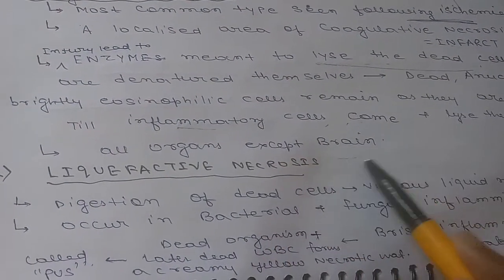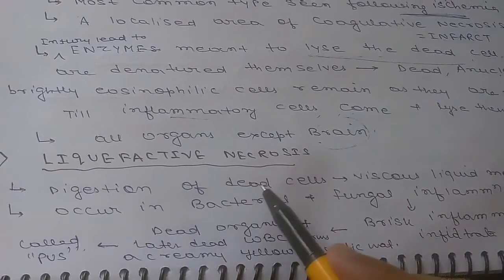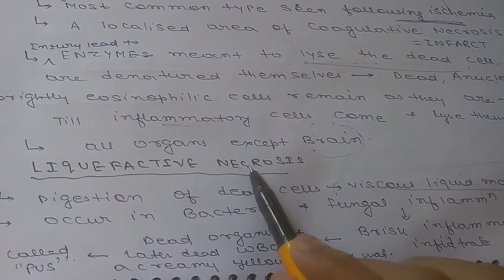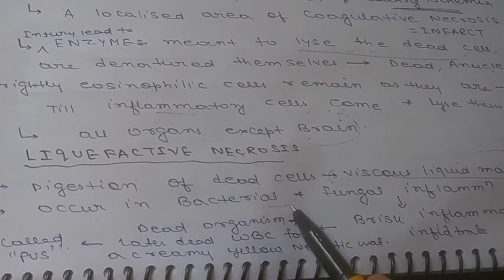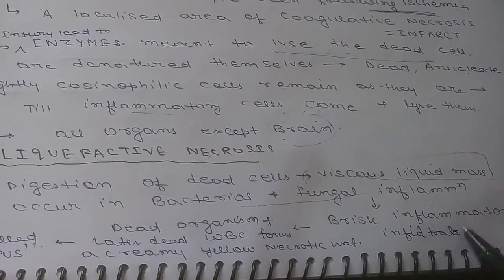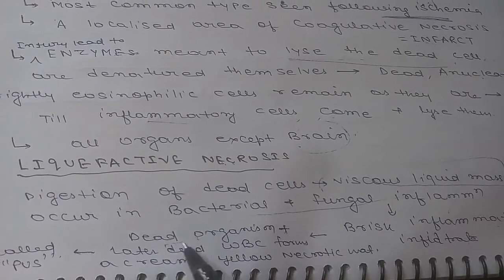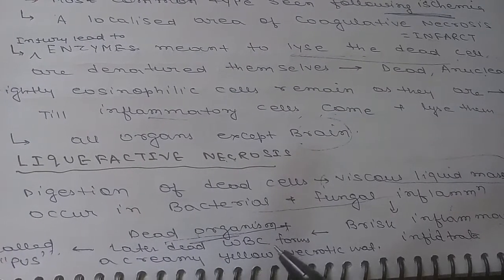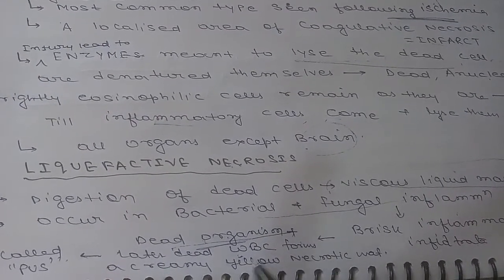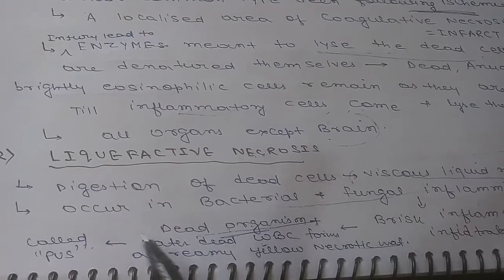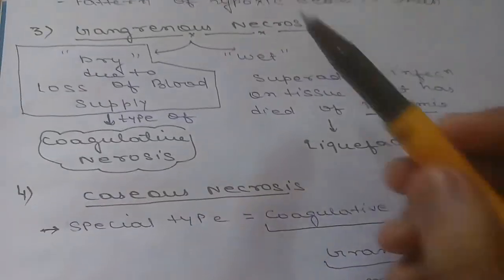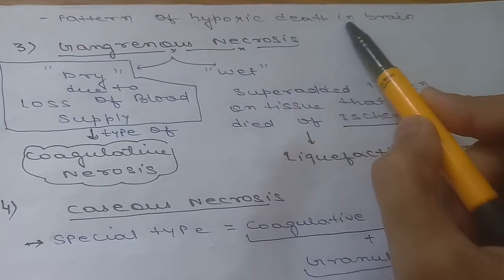The next type is liquefactive necrosis. In this, digestion of dead cells occurs, leading to a viscous liquid mass-like appearance. It is generally seen in bacterial and fungal inflammation. Dead organisms plus dead WBCs form a creamy yellow necrotic material called pus. Liquefactive necrosis is also seen in hypoxic death in the brain.